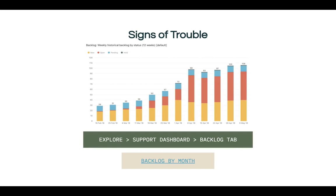Within your backlog tab in your pre-built support dashboard, you'll find a query that represents the weekly historical backlog by status. If your query looks similar to the screenshot here, this could indicate there is a sign of trouble and would encourage you to go take a look at other clues that may help you fill in the gaps as to why that rising backlog is occurring. If you'd like to view this query month over month, I do have a report recipe that I'll link at the end of the video.